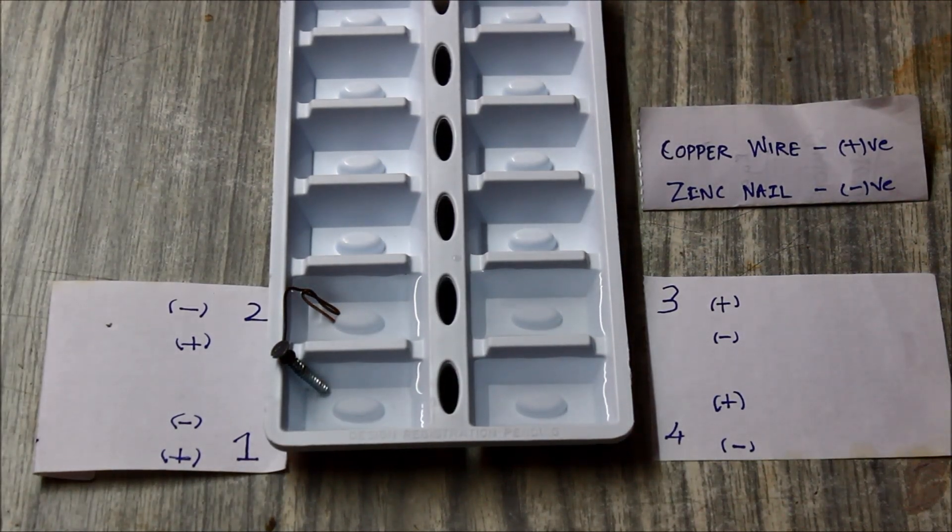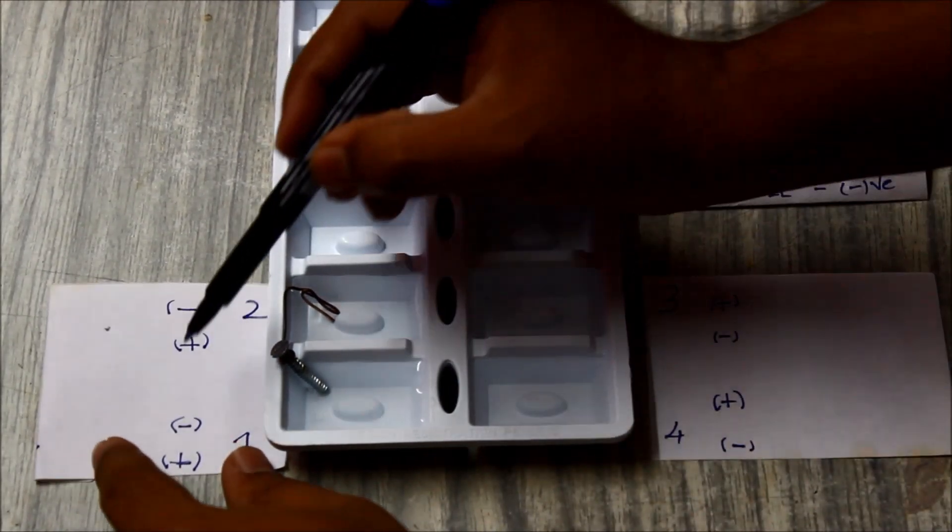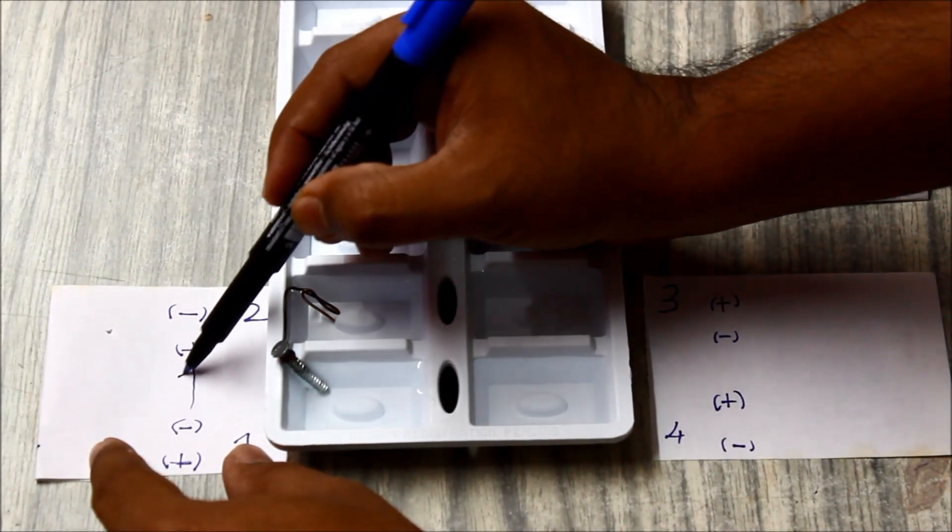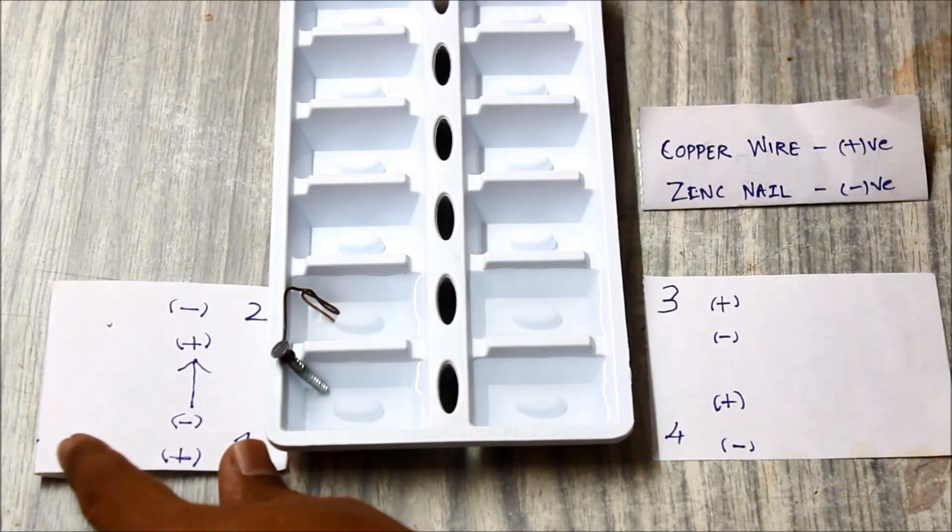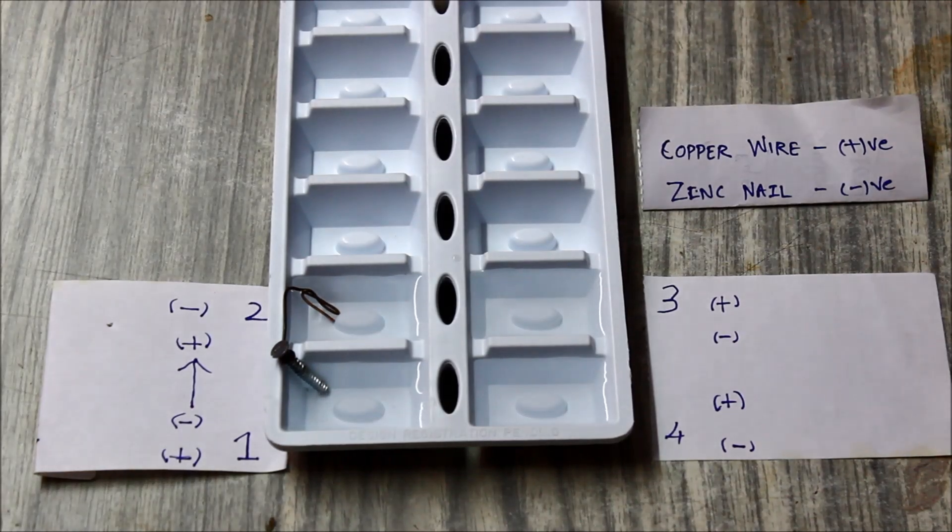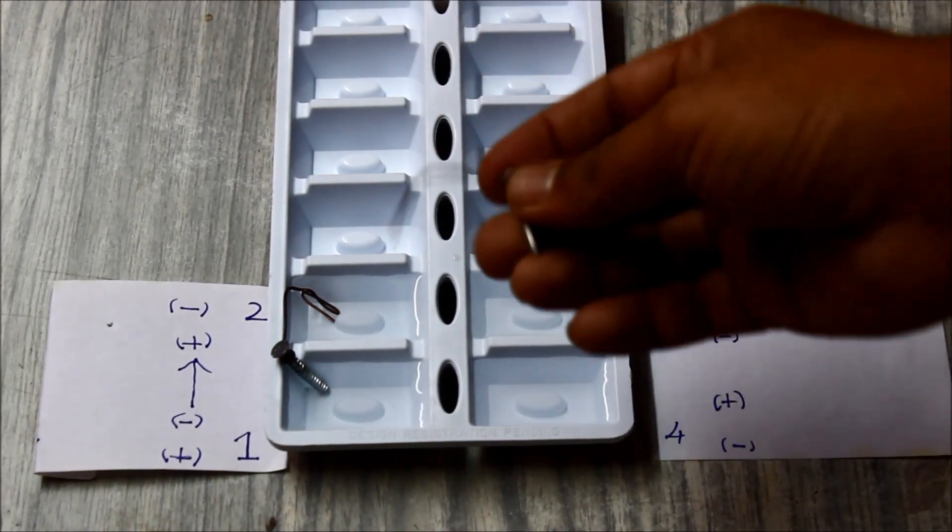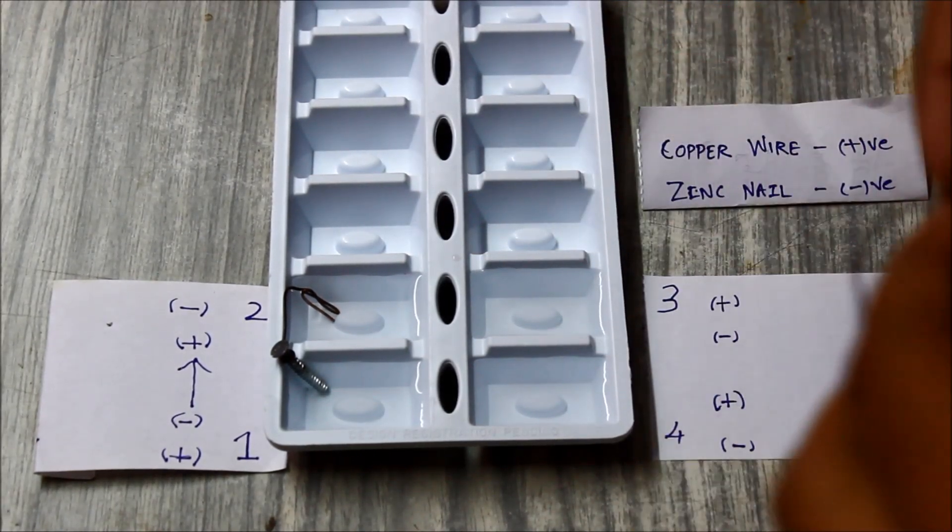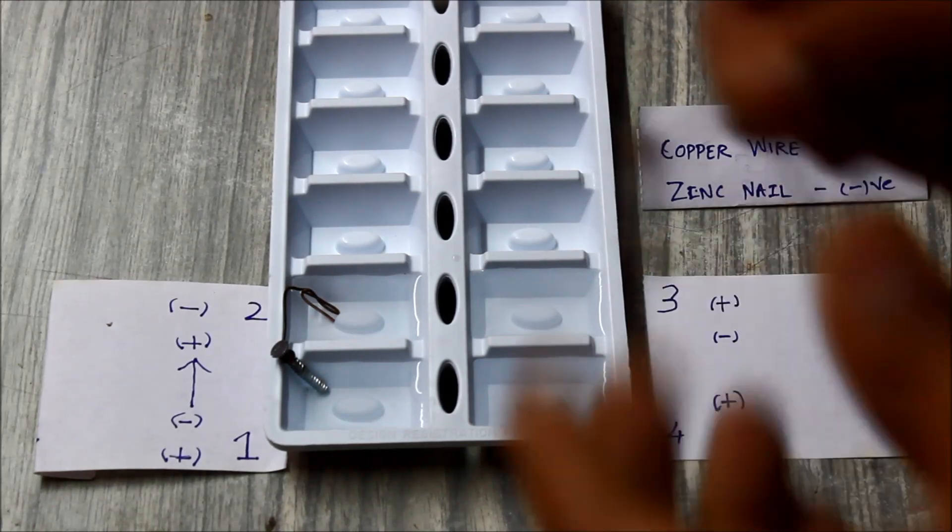We know that electrons flow from negative to positive, so it will flow from cell 1 to 2. Then we'll put the negative into the second cell and connect it with the third cell with the positive.